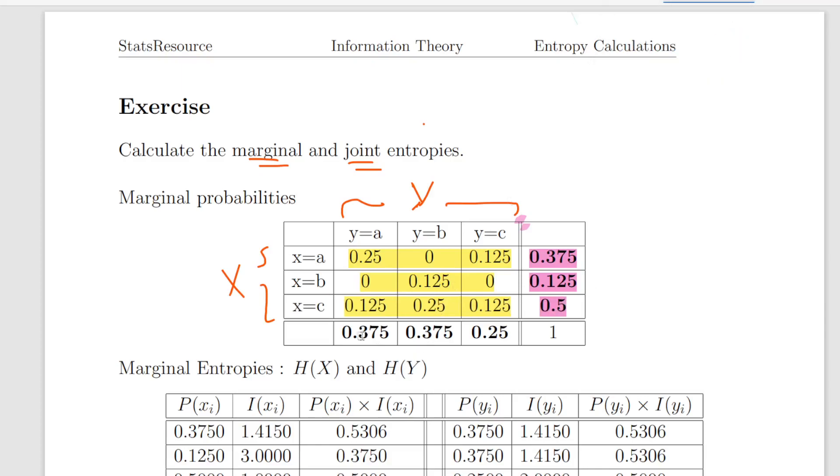So what we're going to do now is the same thing for Y. Calculate the columns: 0.25, 0 and 0.125, that gives us 0.375. Likewise 0.375 here and then 0.25.